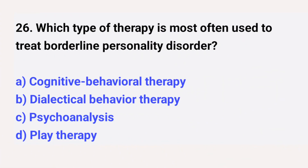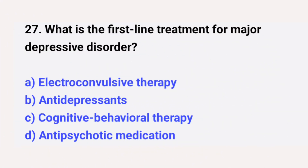Question number twenty-six: which type of therapy is most often used to treat borderline personality disorder? The right answer is option B: dialectical behavior therapy. Question number twenty-seven: what is the first-line treatment for major depressive disorder? The right answer is option B: antidepressants.